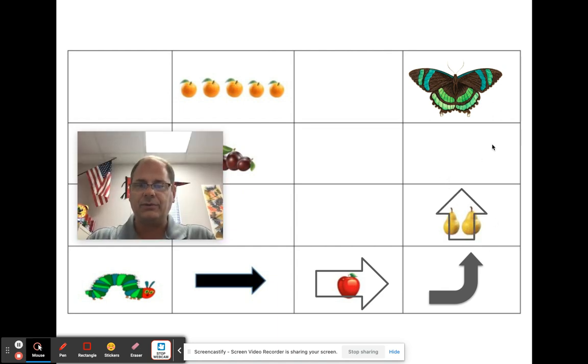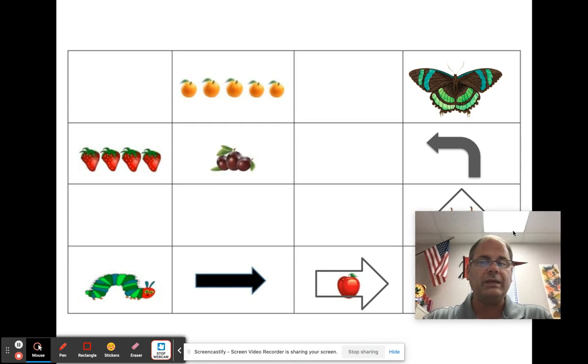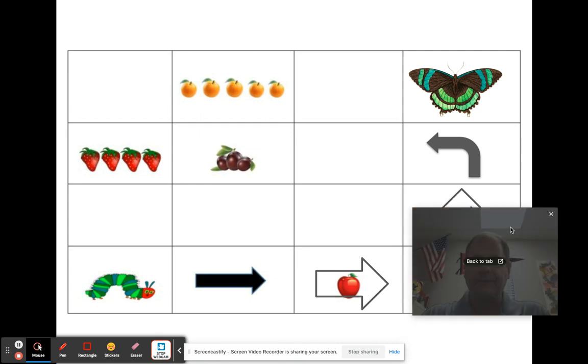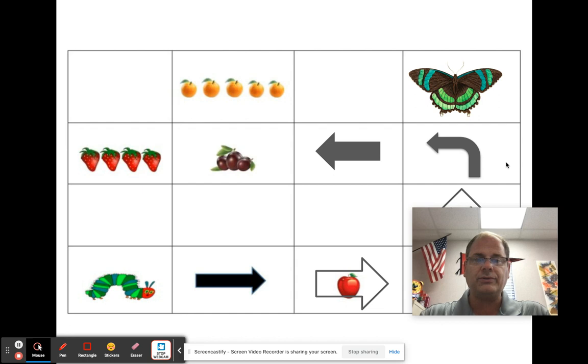And then he wants to go straight. And then he wants to turn again because he wants to eat more fruits and vegetables before he turns into a butterfly. So then he wants to go straight and eat the cherries.